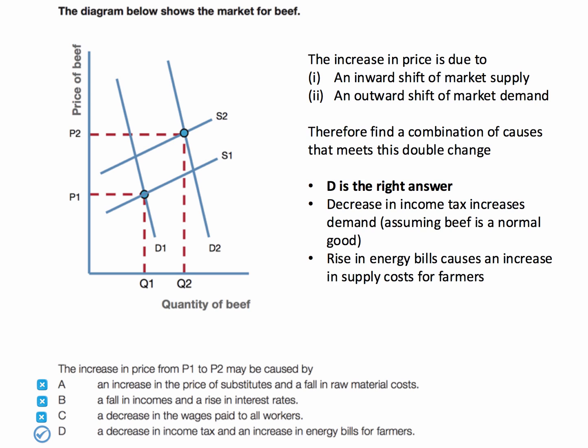Which leaves D, and D is right. A decrease in income tax increases demand, assuming beef is a normal good with a positive income elasticity of demand. And an increase in energy bills for farmers — electricity bills and so on — causes an increase in their costs, and an increase in supply costs causes the supply curve to shift to the left. So D is the right answer. Both answers fit the shifts in demand and supply shown in the diagram.